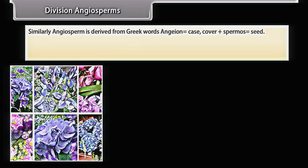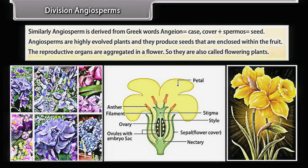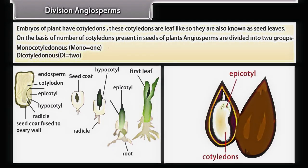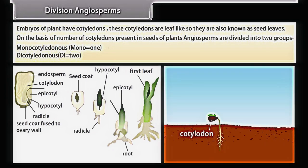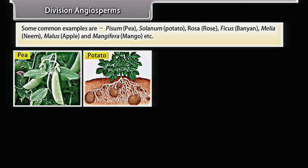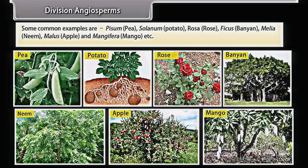Angiosperm is derived from Greek words 'angion' (case/cover) and 'spermos' (seed). Angiosperms are highly evolved plants that produce seeds enclosed within the fruit. Their reproductive organs are aggregated in a flower, so they are also called flowering plants. Embryos have cotyledons — leaf-like seed leaves. On the basis of number of cotyledons, Angiosperms are divided into Monocotyledonous (mono = 1) and Dicotyledonous (di = 2) groups. Common examples are Pisum (pea), Solanum (potato), Rosa (rose), Ficus (banyan), Melia (neem), Malus (apple), and Mangifera (mango).